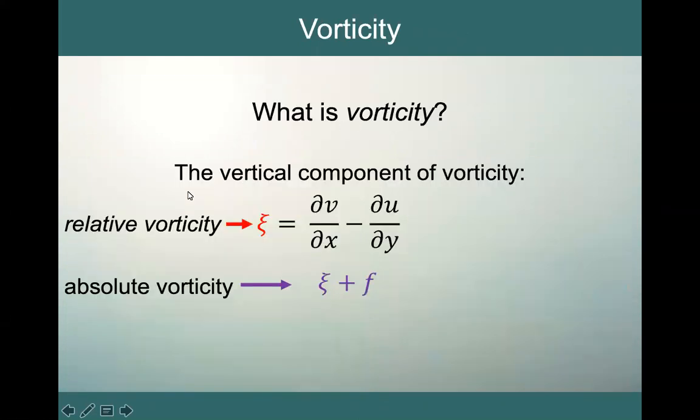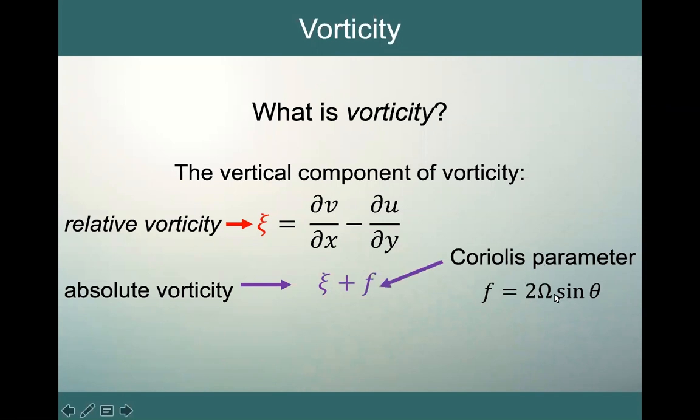So now what is vorticity? Well, we've broken it down to get our vertical component of our vorticity. That's what we're interested in. So we saw that the vertical component in the local component of our vorticity gave us our relative vorticity zeta of dv/dx minus du/dy. And then we're going to add that to our planetary vorticity, which was f. And so that's our Coriolis parameter, f equals 2 omega sine theta. And so that gives us our absolute vorticity of zeta plus f.